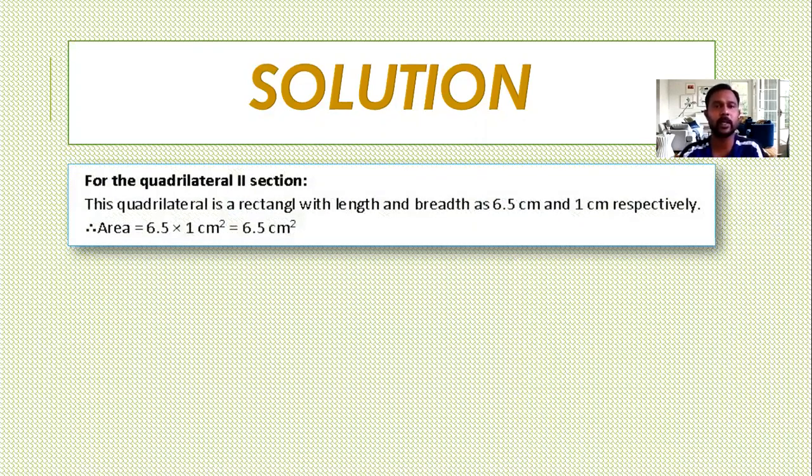What was the next part? It was a rectangle. For the quadrilateral 2 section, the quadrilateral is a rectangle with length 6.5 cm and breadth 1 cm. And we better know area of a rectangle is length into breadth. Therefore, area is equal to 6.5 into 1 that is 6.5 cm square.